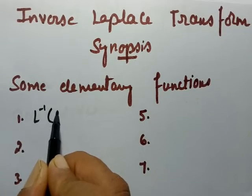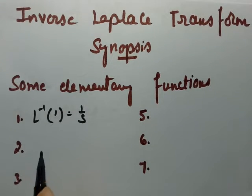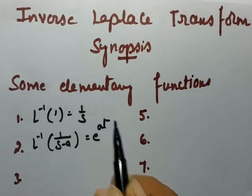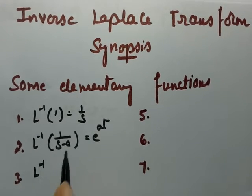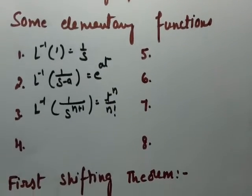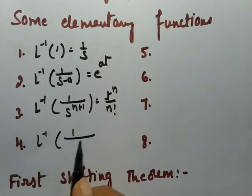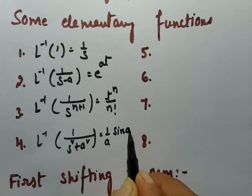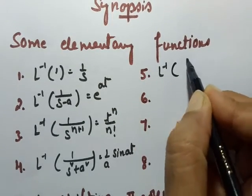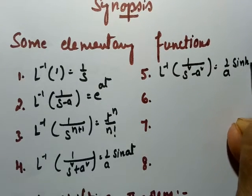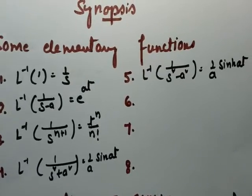Inverse Laplace transform of 1/s is equal to 1. Inverse Laplace transform of 1/(s minus a) is equal to e^(at). Inverse Laplace transform of 1/s^(n+1) can be written as t^n / n!. Inverse Laplace transform of 1/(s² + a²) is 1/a times sin(at). Inverse Laplace transform of 1/(s² - a²) is equal to 1/a times sinh(at).